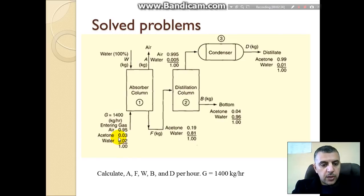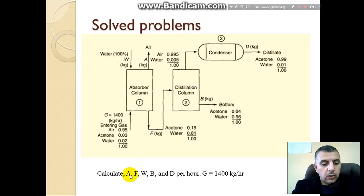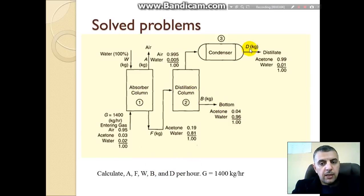Let's solve a problem about the separation of acetone from a system of air and water. Water absorbs the acetone, and then the acetone is separated in the distillation column. You are asked to calculate: A, the air flow out; F, the feed to the distillation column; W, the water input to the absorber column; B, the bottom product of the distillation column; and D, the distillate from the condenser.